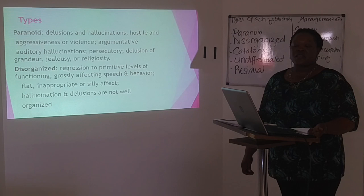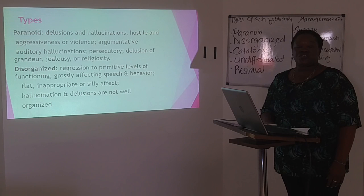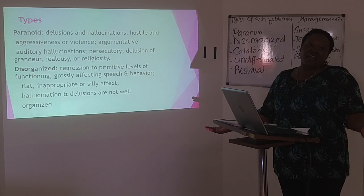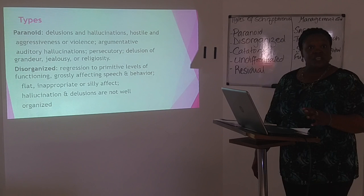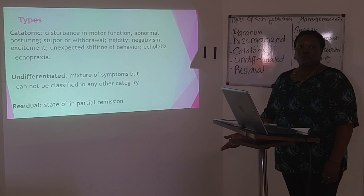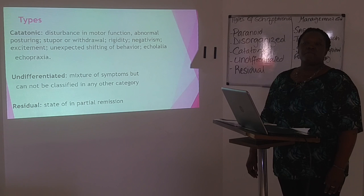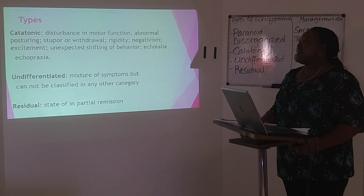Disorganized type is characterized mostly by regression to primitive levels of functioning — a 35-year-old will go back to functioning like a 15-year-old, with silly affect, inappropriate speech and behavior patterns, and presentations of hallucinations and delusions. The catatonic type is predominantly characterized by disturbance in motor function, be it exaggerated or decreased movements. There may be stupor, withdrawal, rigidity, negativism, or there may be excitement with constant moving or pacing and inability to remain still.